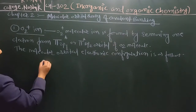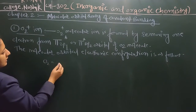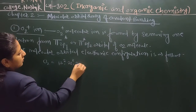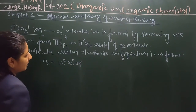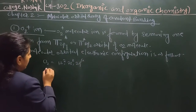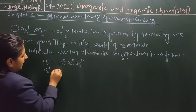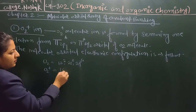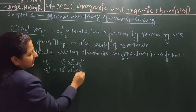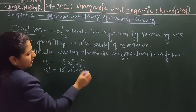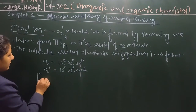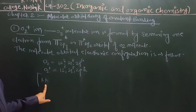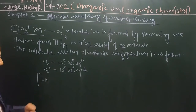The electronic configuration of oxygen O2 is 1s2 2s2 2p4. For the O2 plus ion, there is a minus one charge, so the electronic configuration becomes 2p3, that is 3 electrons in 2p. Whenever there is a sigma 2 sigma orbital, we take it into account.